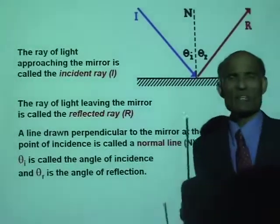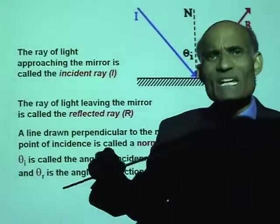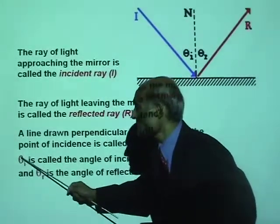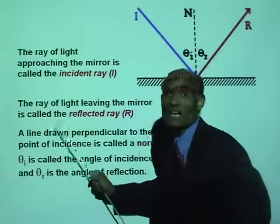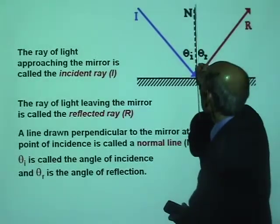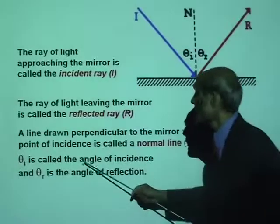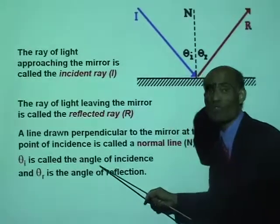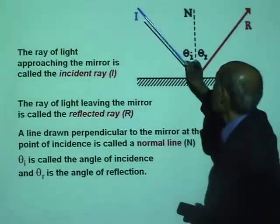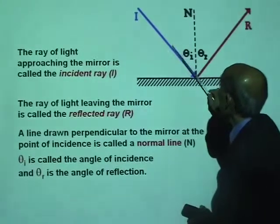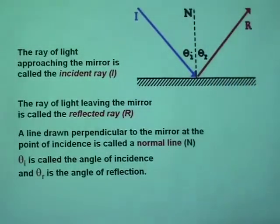I'm going to call it theta. Theta I stands for the angle the incident ray makes with the normal, and we call that the angle of incidence. What is the angle of incidence? The angle of incidence is the angle made by the incident ray with the normal.